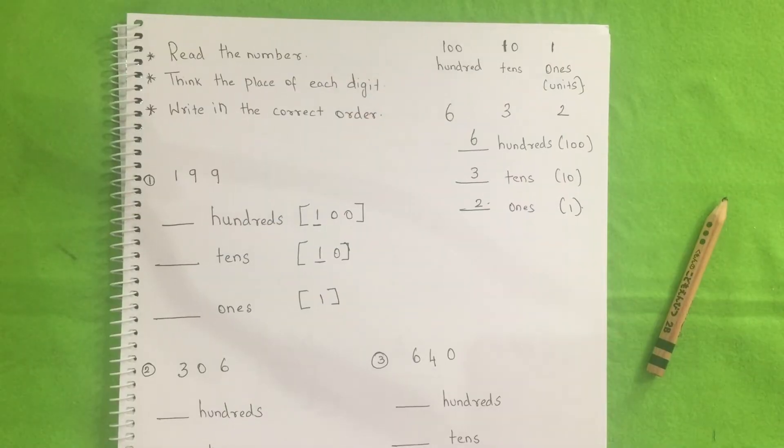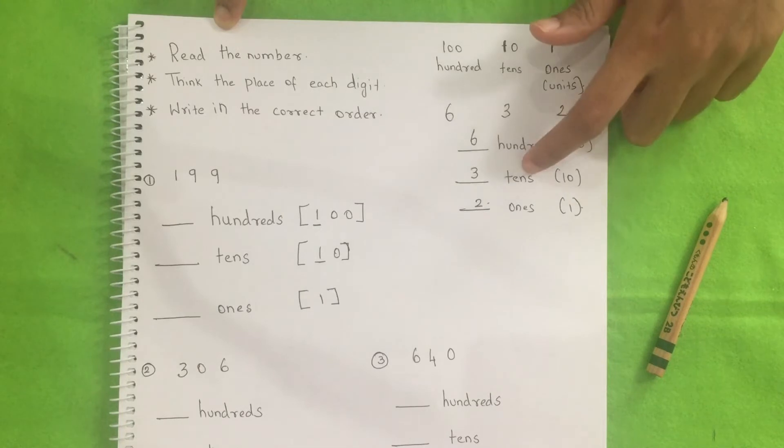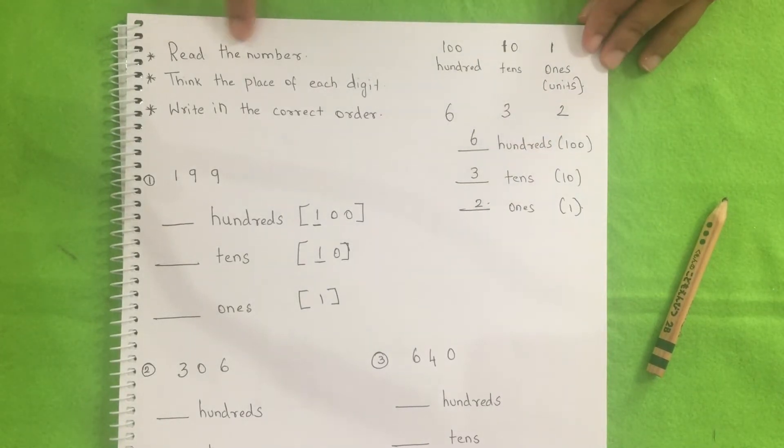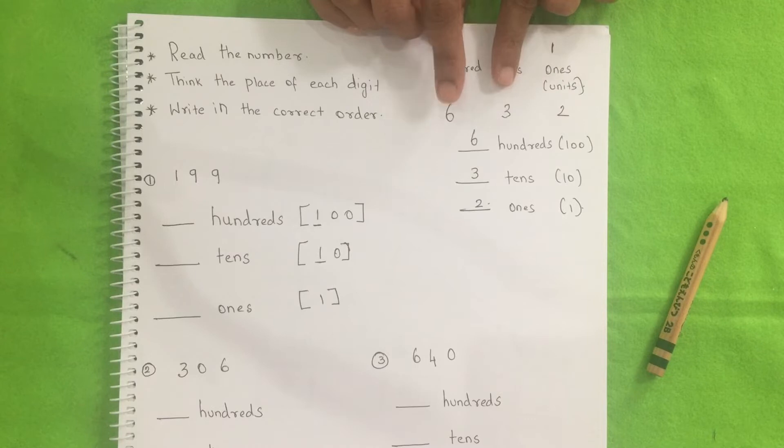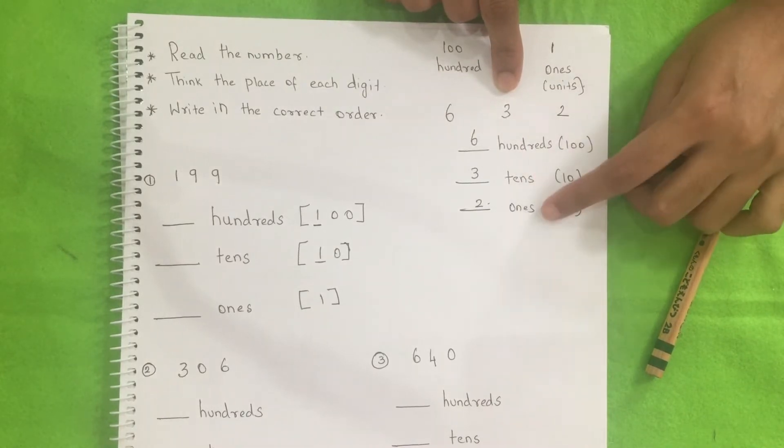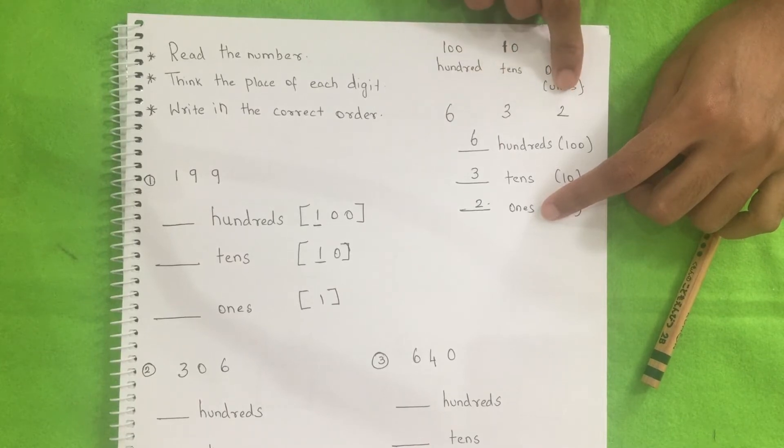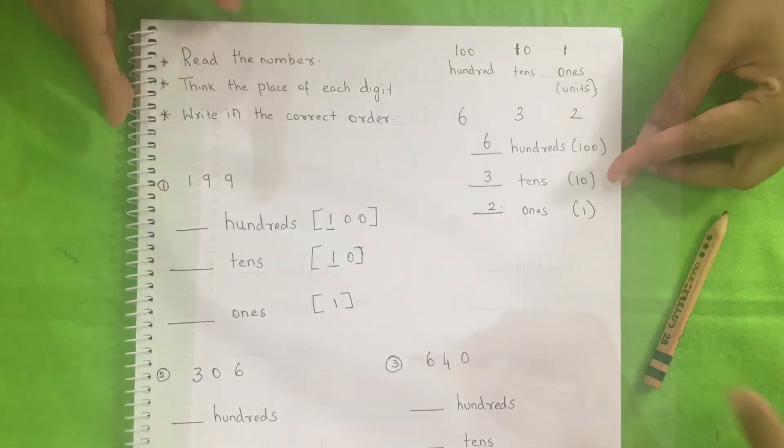So this is the reverse of our previous activity and here he needs to write the number that is there in the hundreds, tens and ones place. So read the number. Think the place of each digit, write in the correct order. For example, here I have given the number as six hundred and thirty-two. So hundreds, we have six and in the tens place three and in the units or ones place we have two. So are you ready? Yes.